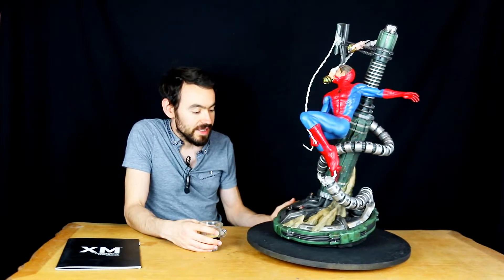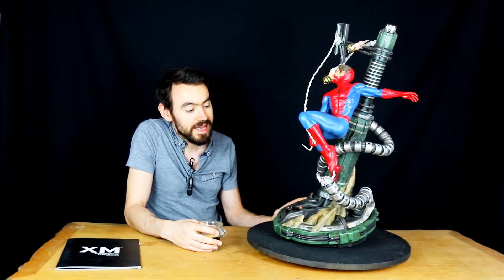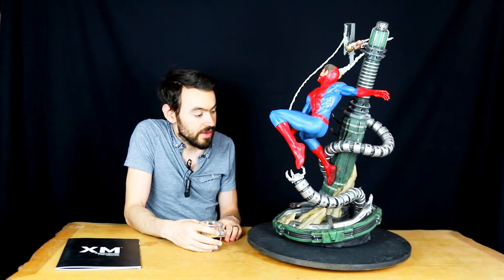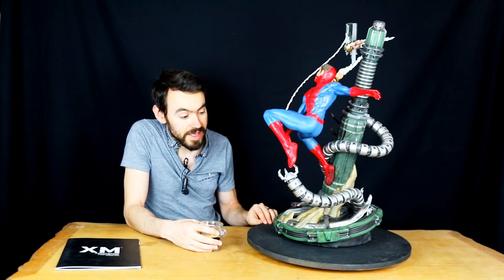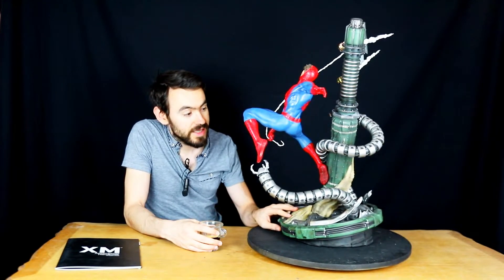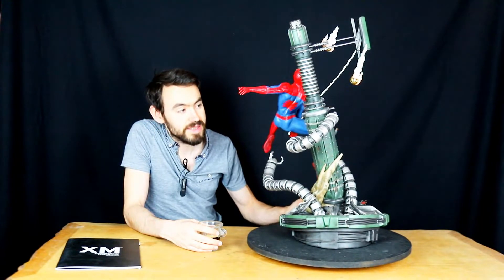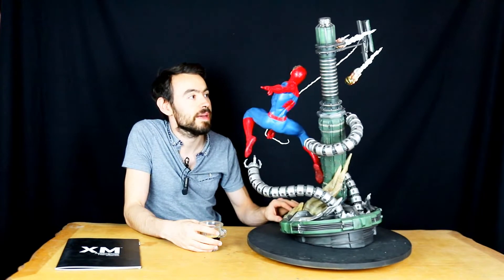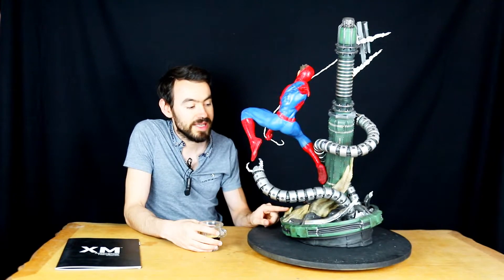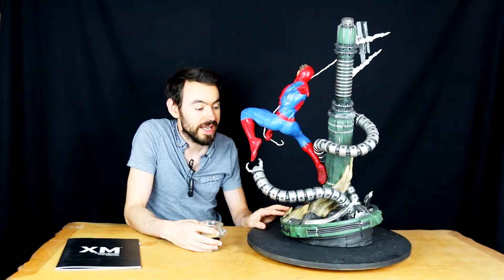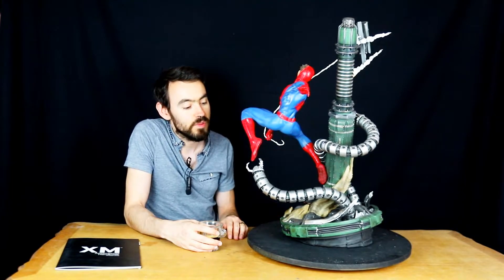Alors on fait un rapide tour d'horizon, après je vous la zoomerai, donc on retrouve le pilier d'Électro. Alors on a même, je viens juste de capter là en regardant et c'est très certainement le cas d'ailleurs, des morceaux de sable, une espèce de tentacule de sable. Oui d'ailleurs c'est sûr que c'est le cas en fait, c'est moi comme un gros crétin qui n'avais pas capté.